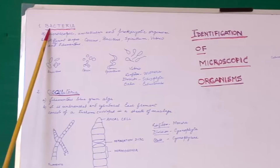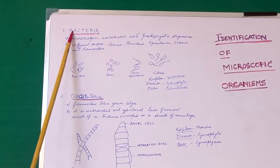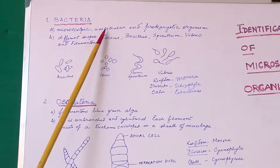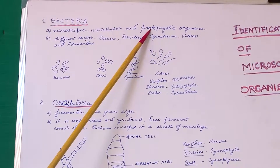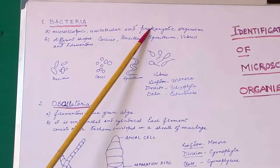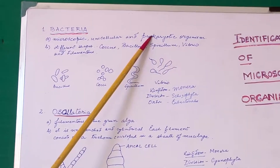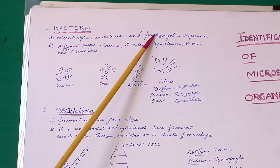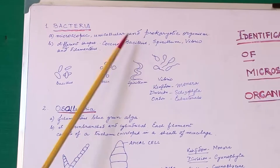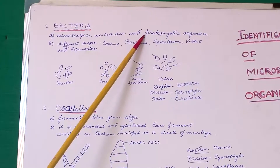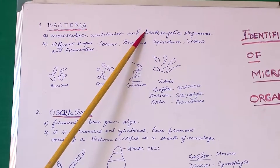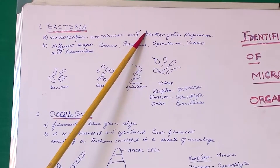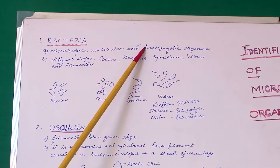We start off with bacteria. Bacteria are microscopic, unicellular and prokaryotic in organization. That means they have a nucleoid structure — they do not have a nuclear membrane and cellular organelles are lacking. Only ribosomes are present and one chromosome is there.